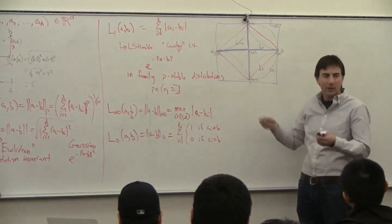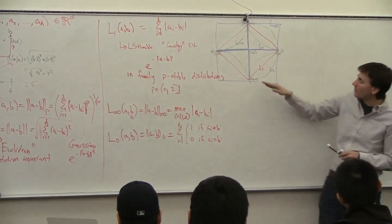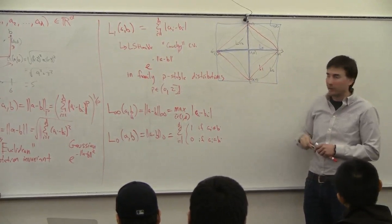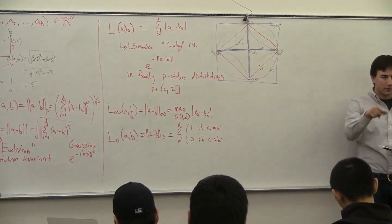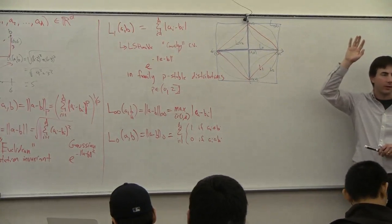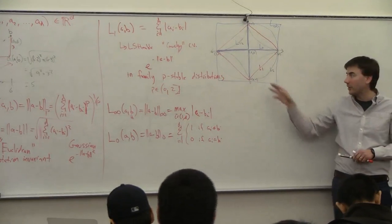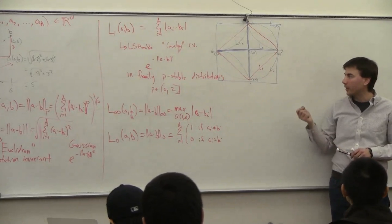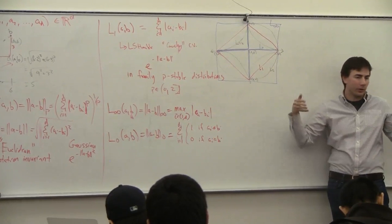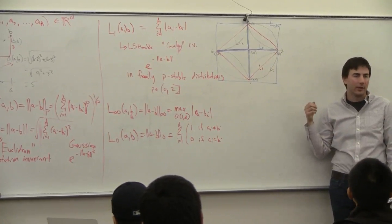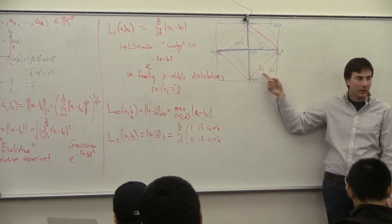Towards the L0 distance, what happens is that it's no longer convex. This shape is no longer convex, and this makes it hard to work with anything less than the L1 distance. If you're trying to optimize this function — searching for a local minimum — it may have lots of local minima which are not global minima because it's not convex.